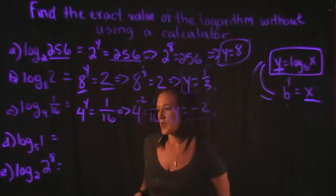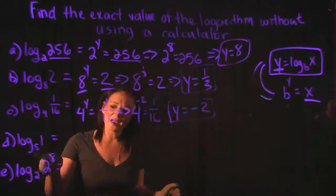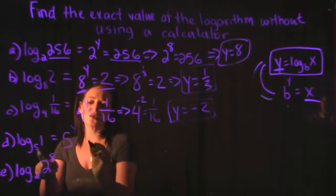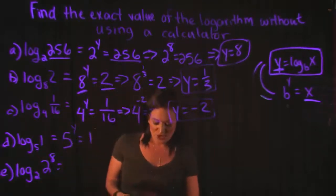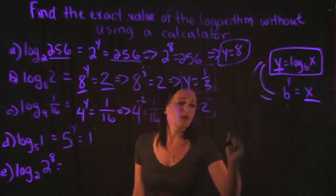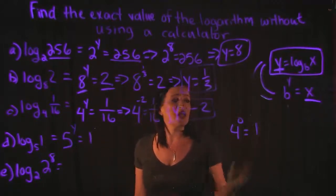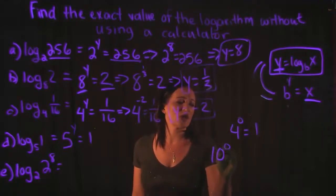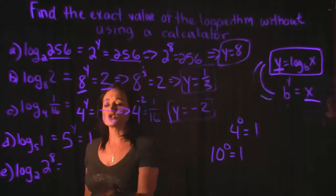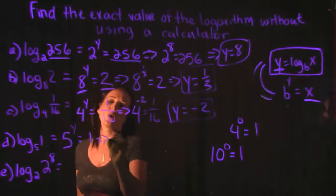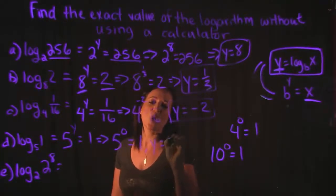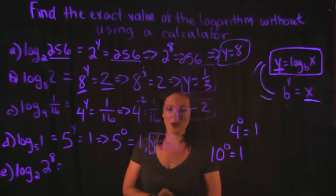Example D: log base five of one equals what? Switching to exponential form: five to the Y is equal to one. Five to what power is equal to one? Anything to the zero power is equal to one — four to the zero is one, ten to the zero is one. So five to the zero power equals one, which tells us that Y has to be zero.